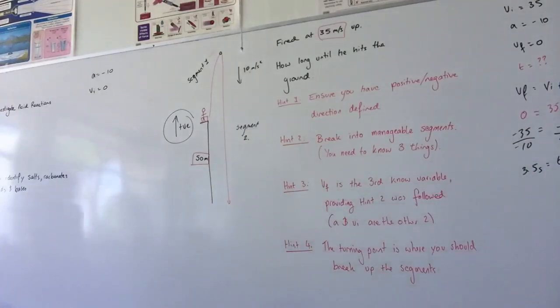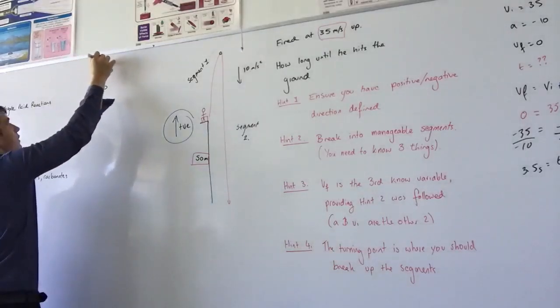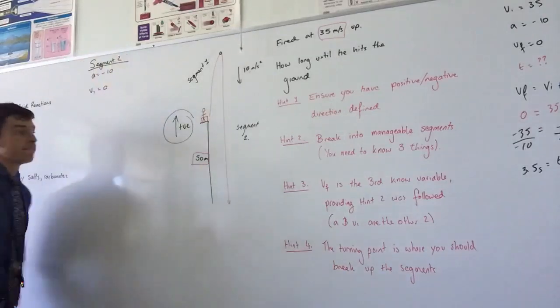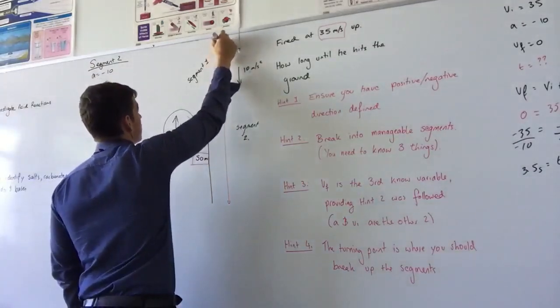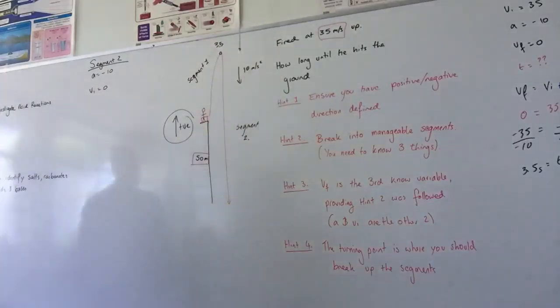We also know the final velocity. Do we? Isn't the top of, which one are we doing? Segment two. So it's moving at 10 meters per second. So it took 3.5 seconds to reach this point here. What I'm getting at is, do we know our third piece of information? We don't. So we need to find something out. What can we find out? Distance. Very good. So what do we need to do to find our distance?